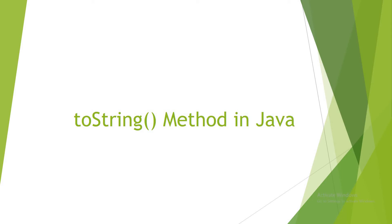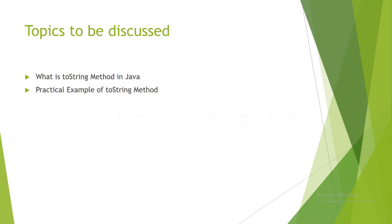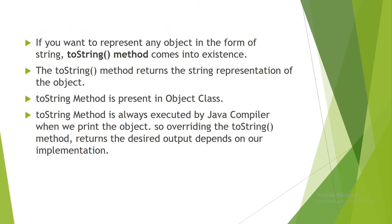Hello everyone. Today in this video we are going to talk about the toString method in Java. We'll discuss what the toString method is and then see a practical example. We can make use of toString whenever we want to represent any object in the form of a string. The toString method returns the string representation of the object.